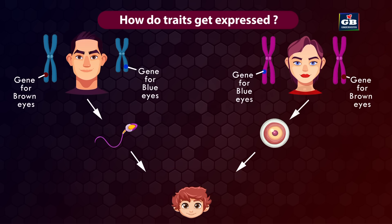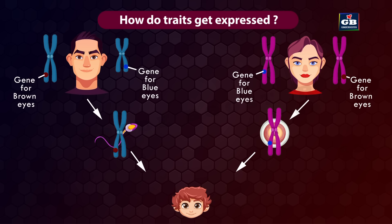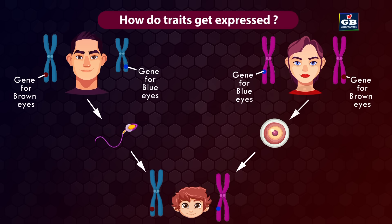Each trait is controlled by two genes, but these two genes are not present on the same DNA strand — DNA is coiled into chromosomes, which are present in pairs, so two alleles of a specific trait are on different chromosomes. Normally cells have two sets of chromosomes, but gametes are haploid and carry only one set. So only one of the two alleles for a character enters the gamete, and when two gametes fuse, the offspring gets a pair of genes for that character.